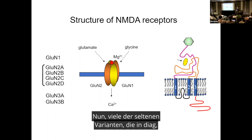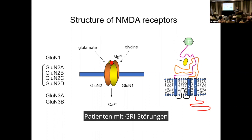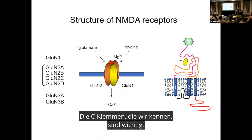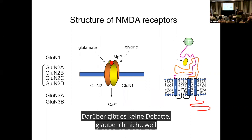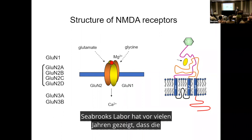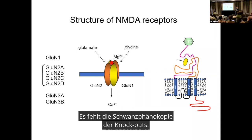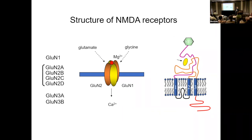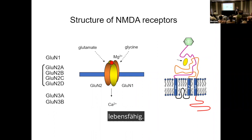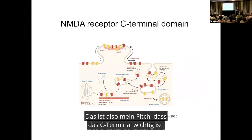A lot of the rare variants that patients with GRIN disorders have, the rare variants affect channel properties. This area is more likely to affect trafficking. The C-terminal domains are clearly important — Bhatt's group many years ago showed that knock-ins lacking the tail phenocopy the knockouts. For example, if you knock out GluN2B, the animals aren't viable, and if you knock it in without the tail, they're also not viable.